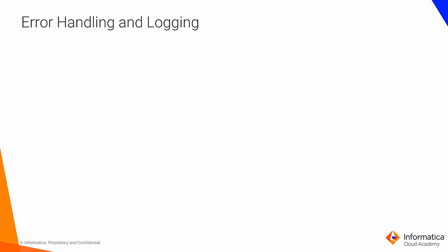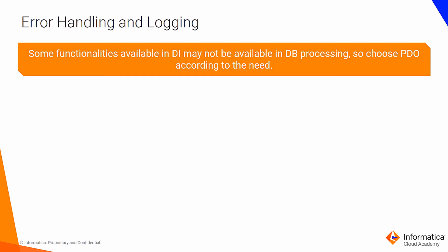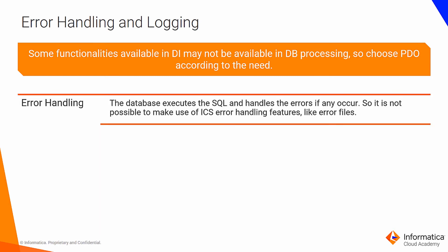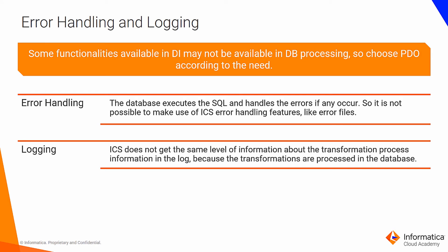Let us discuss how error handling and logging are handled when pushdown optimization is enabled. Some functionalities available in DI may not be available in DB processing, so choose PDO according to your requirement. When PDO is enabled, the database executes the SQL — if any error occurs, the database handles it — so it is not possible to use ICS error handling features like error files. If a session configured for full pushdown optimization fails, ICS cannot perform incremental recovery because the database processes the transformations. Instead, the database rolls back the transaction. If the database server fails, it rolls back transactions on restart. If ICS fails, the database server rolls back the transaction. For logging, ICS does not get the same level of transformation process information in the log because transformations are processed in the database.